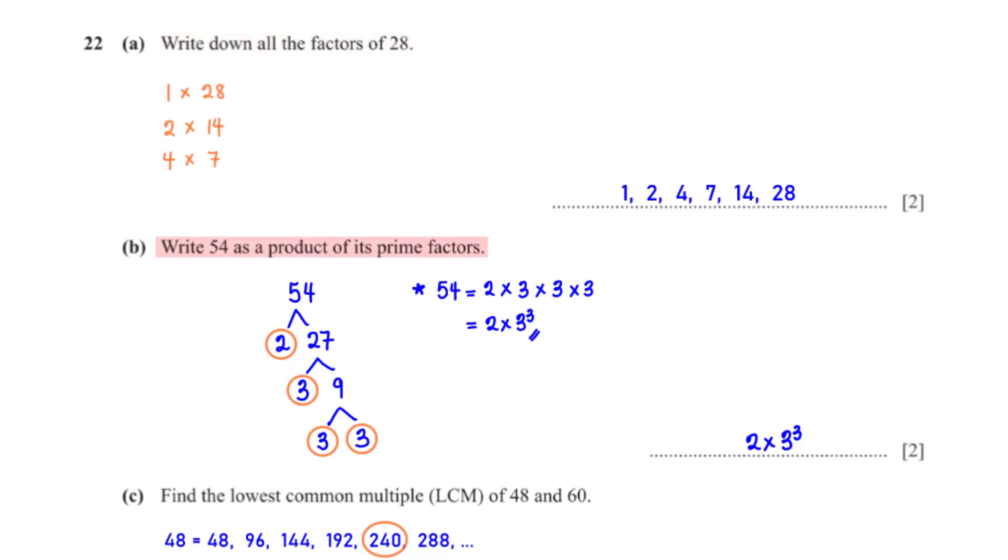Write 54 as a product of its prime factors. 54 can be written as 2 times 27. 2 is a prime number, so we circle it. 27 can be written as 3 times 9. 3 is a prime number, so we circle it. 9 can be written as 3 times 3. 3 is a prime number, so we circle both.